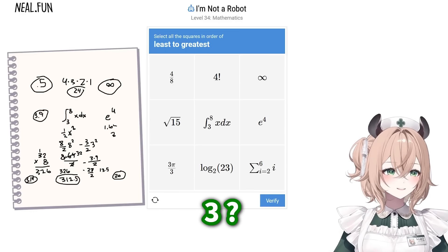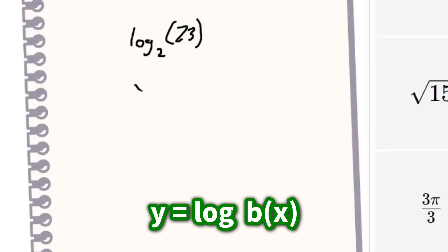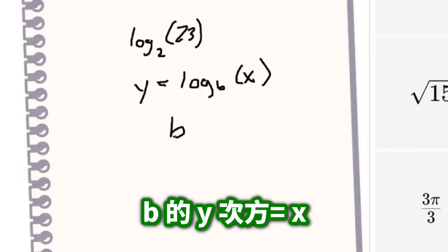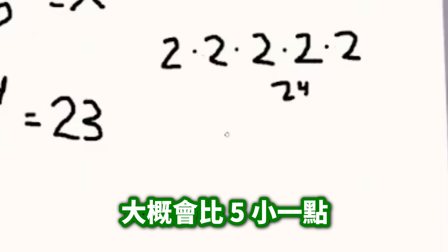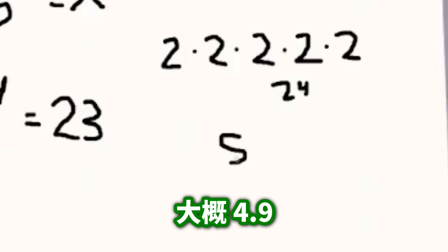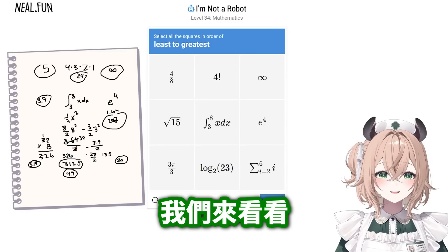How do you do a log? y equals log base b of x means b to the power of y equals x. So it's 2 to the power of y equals 23, so it's a little less than 5 — like 4.9. Final answer.